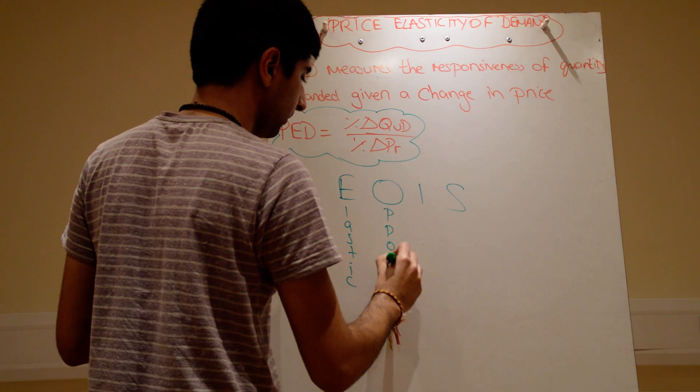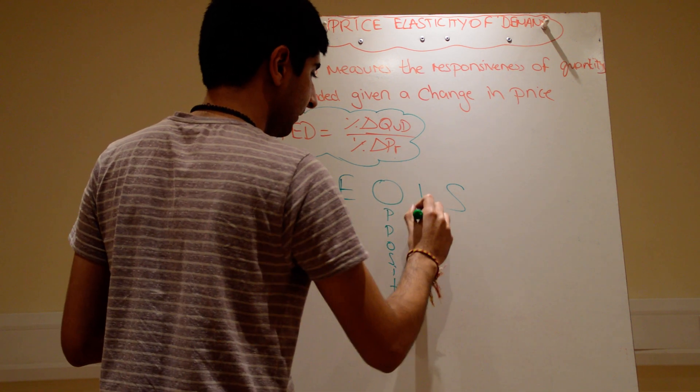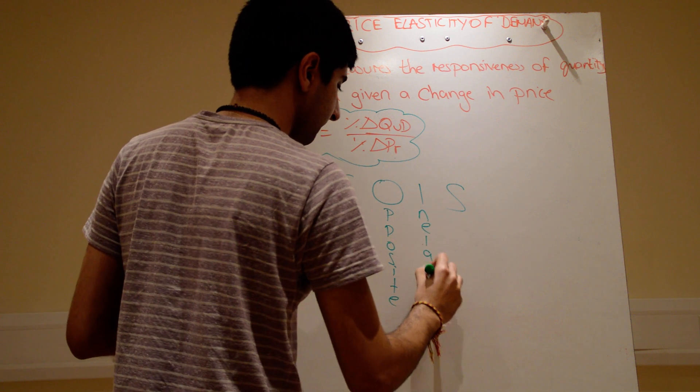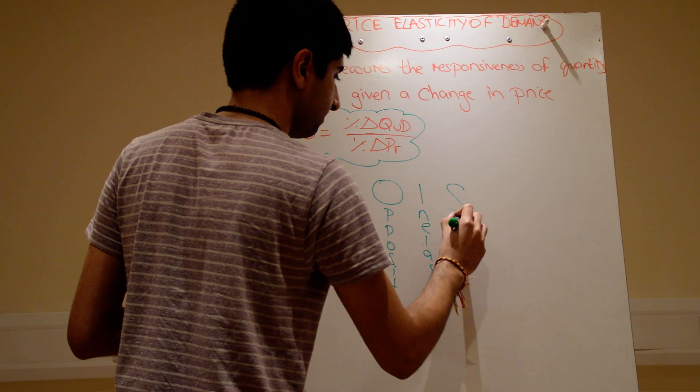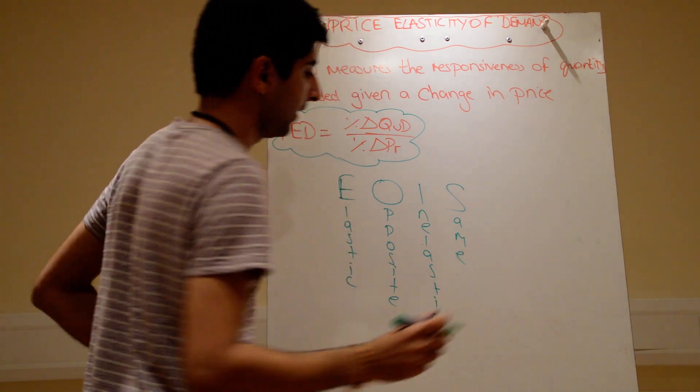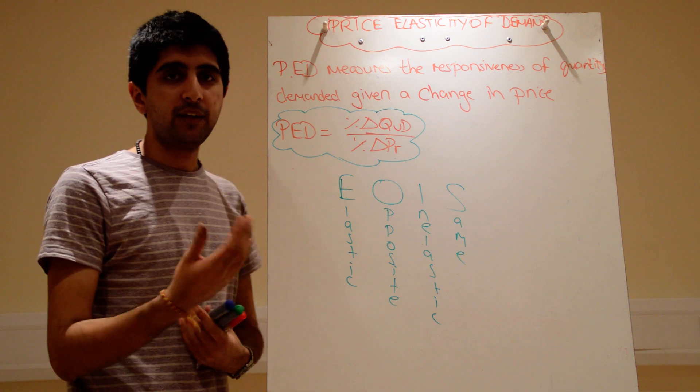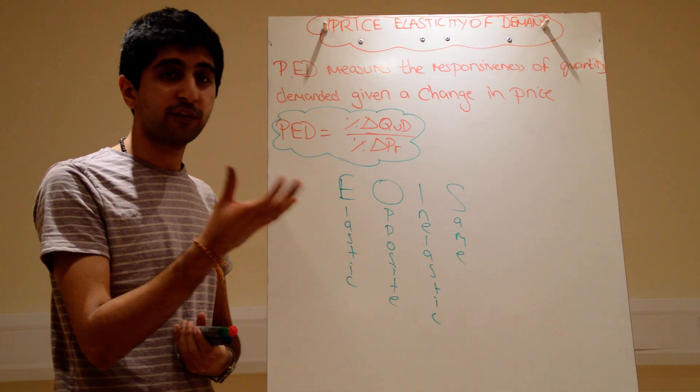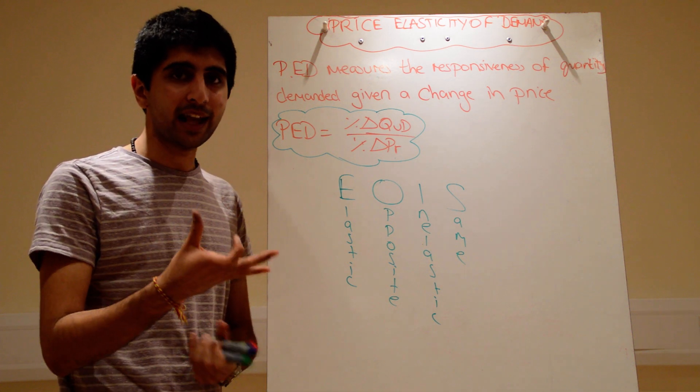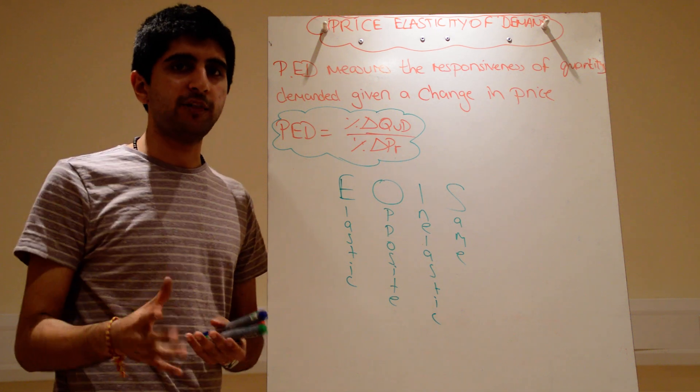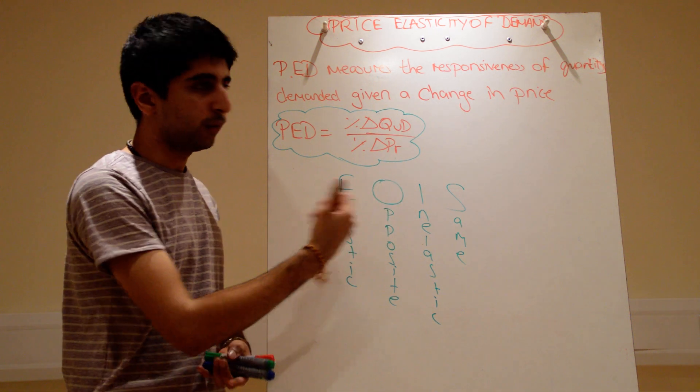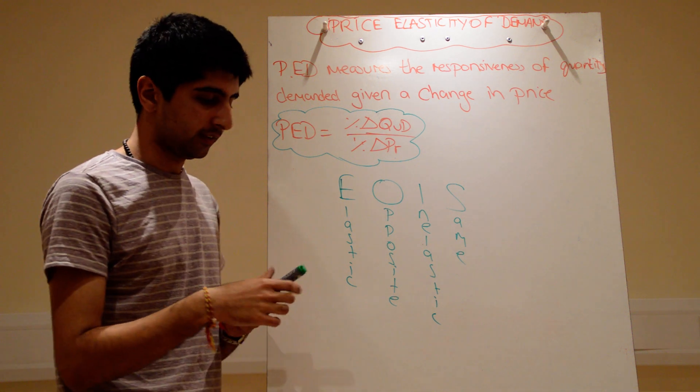Elastic, opposite. Inelastic, same. That's the link to elasticity of demand and to revenue. For firms, it's very important to know if it increases its price and the demand for its good is very much price elastic, well, how is that going to impact on revenue? Well, this little memory device will tell you what the link is.